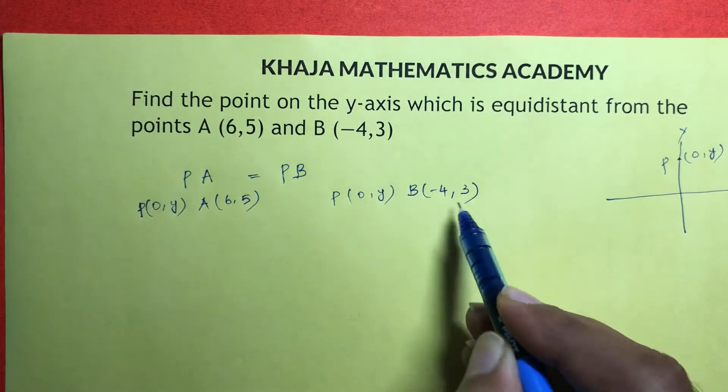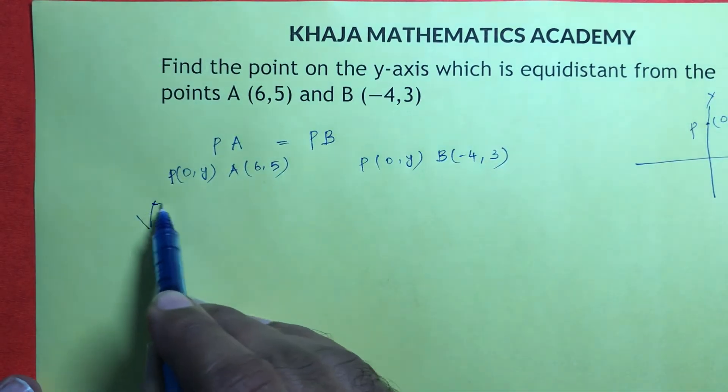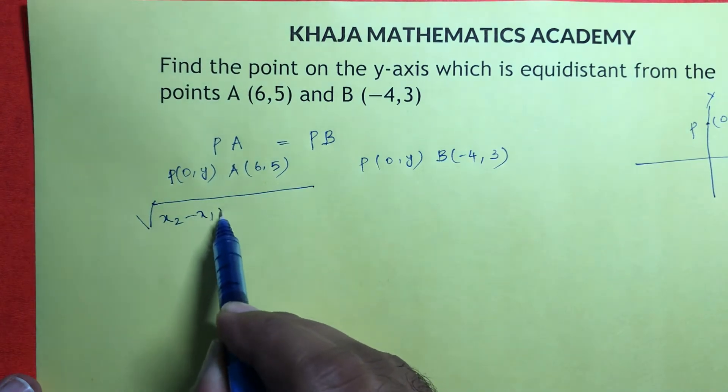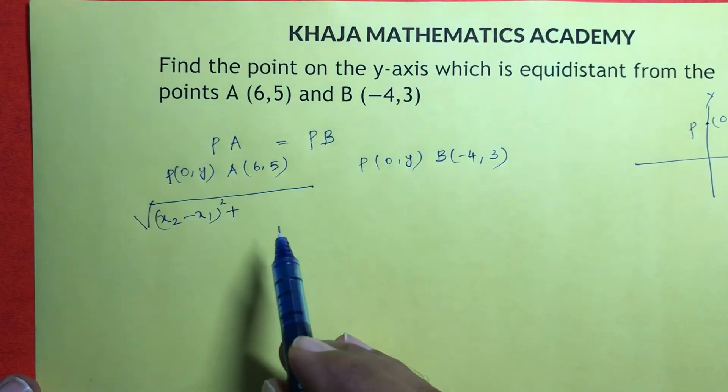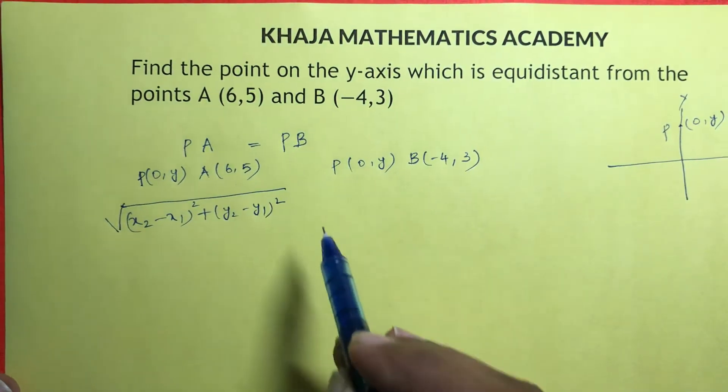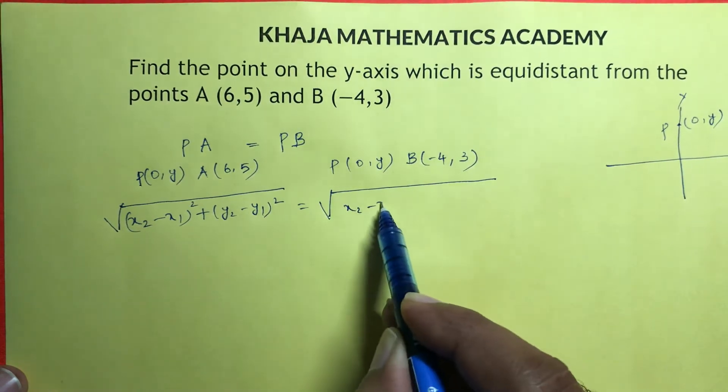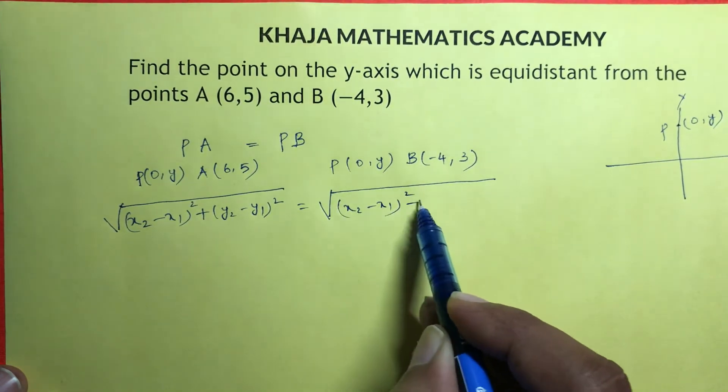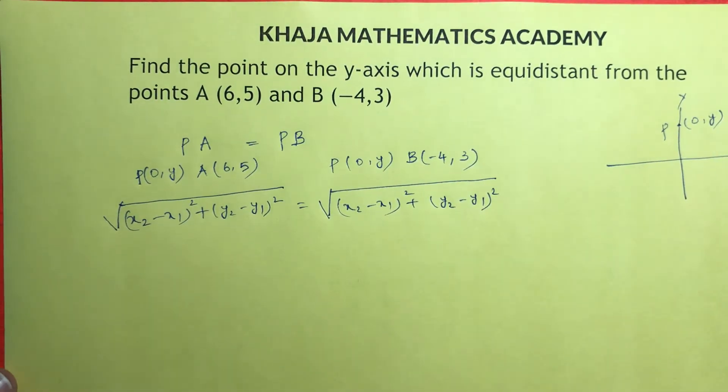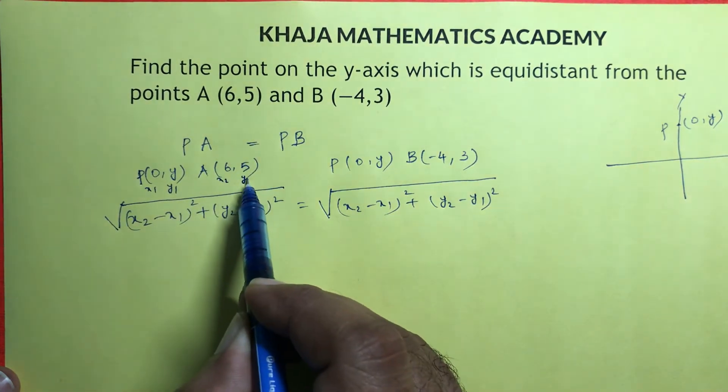Now distance formula, if you write: √[(x₂ - x₁)² + (y₂ - y₁)²] = √[(x₂ - x₁)² + (y₂ - y₁)²]. Here you can consider x₁, y₁, x₂, y₂.